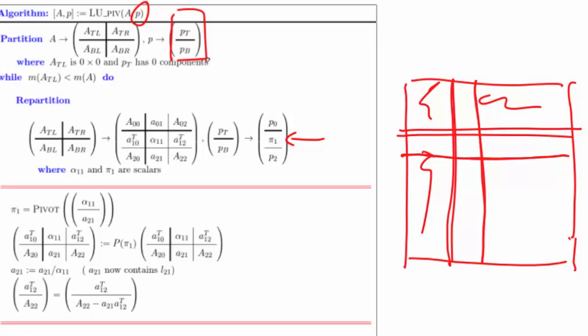Previously, what we would have done is simply taken this entry and divided it into that entry and then done an outer product of these two parts of the matrix, updating this part of the matrix by subtracting it off. What is different now is that if we encounter a 0 here, we've got a problem.